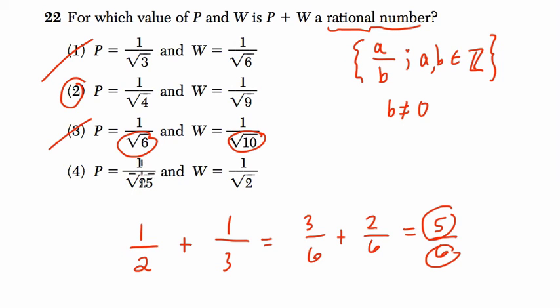Here, 1 over the square root of 25 is 1 fifth, and that is rational. But if you add a rational number to an irrational number, you do get an irrational result.